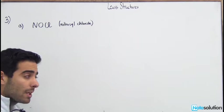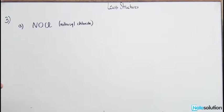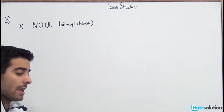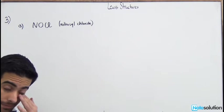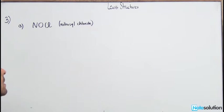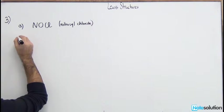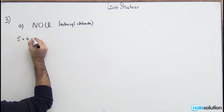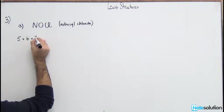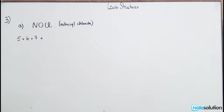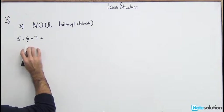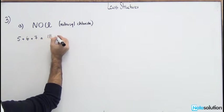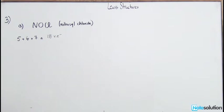Let's start with an example: nitrosyl chloride, or NOCl. First, find the valence electrons. N has five, O has six, and Cl has seven, giving a total of 18 valence electrons.